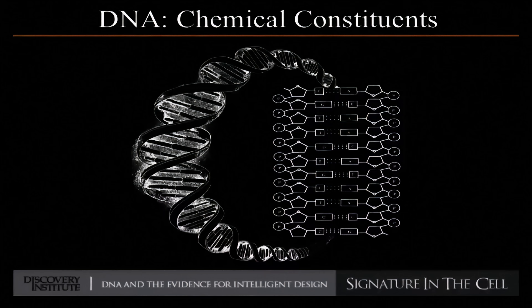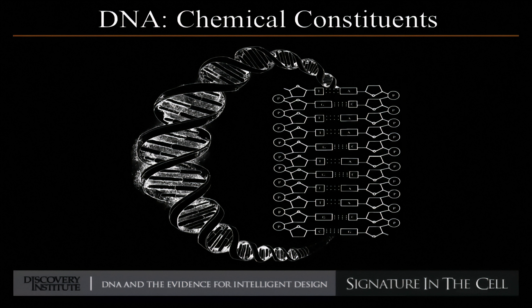I have behind me a diagram — this is the structural formula for the DNA molecule. Along the two sides of the DNA molecule are something called the sugar phosphate backbone. The pentagons are the sugars, the circles are the phosphates, and the backbone of the molecule is not the informational part — it's the medium upon which the information is inscribed. Along the interior of the molecule are two copies, running in opposite directions, of the informational instructions. They're encoded using those bases — the A's, C's, G's, and T's — also known as nucleotide bases.